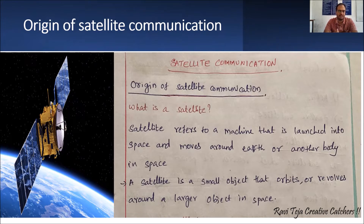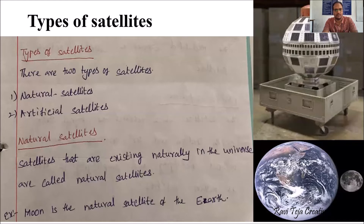A satellite can be man-made or natural. Coming to the types of satellites, there are two types: one is natural satellites and another is artificial satellites.